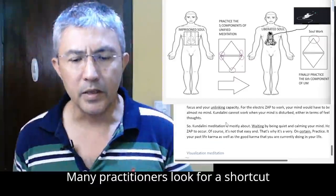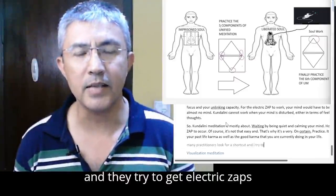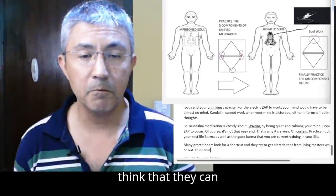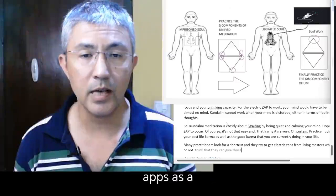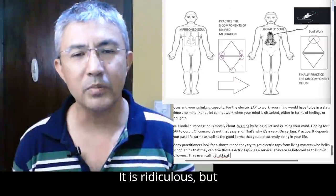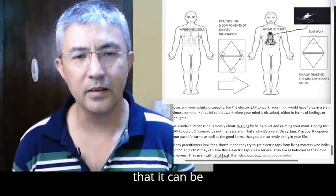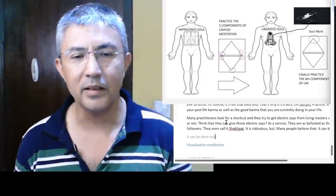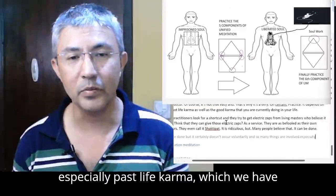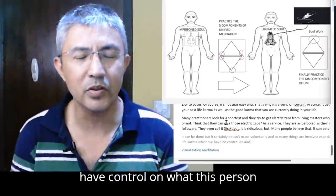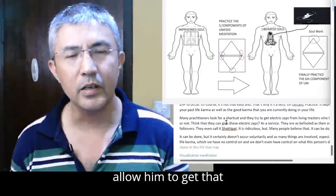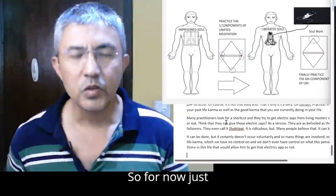That's why it's a very uncertain practice. It depends on your past life karma as well as the good karma that you are currently doing in your life. Many practitioners look for a shortcut and they try to get electric zaps from living masters who, believe it or not, think that they can give those electric zaps as a service. They are as fooled as their own followers. They even call it shakti pot. It is ridiculous, but many people believe that it can be done. It can be done but it certainly doesn't occur voluntarily, and so many things are involved, especially past life karma which we have no control on, and we don't even have control on what this person has done in this life that would allow him to get that electric zap or not.